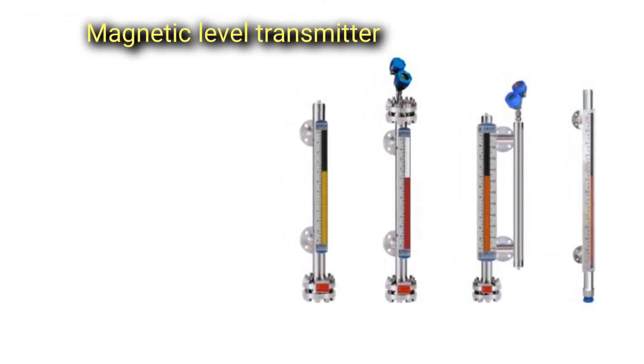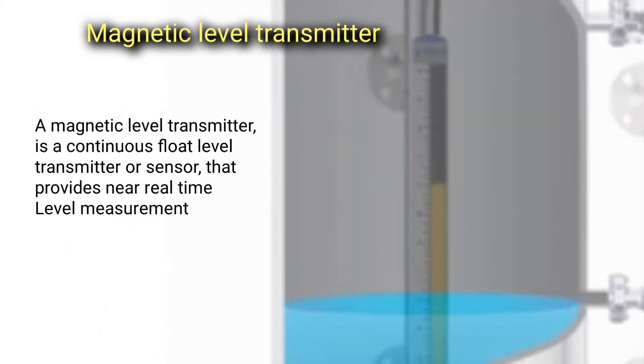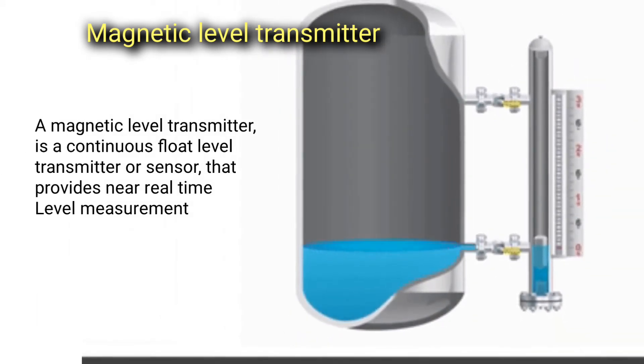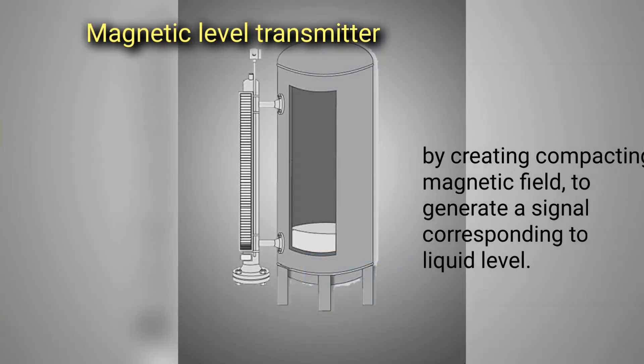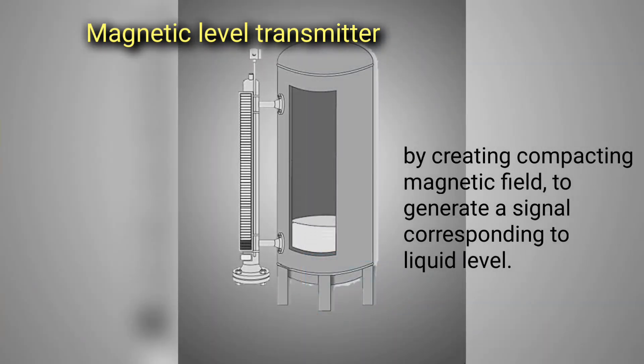Magnetic Level Transmitter. A magnetic level transmitter is a continuous float level transmitter or sensor that provides near real-time level measurements by creating a compacting magnetic field to generate a signal corresponding to liquid level.